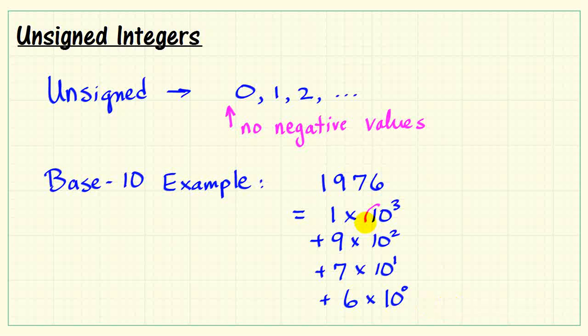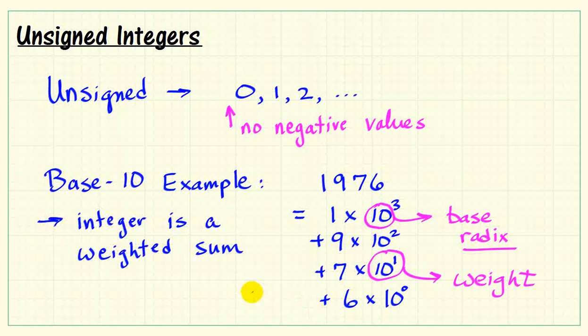When written this way, we observe that 10 is common, and this is called the base, or radix. This gives us the idea of our base-10 numbering system. Each power of 10 indicates a weight, starting with 1, then 10, then 100, and so on. We can think of the integer as a weighted sum.